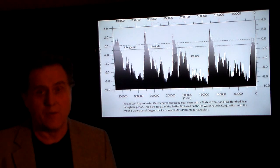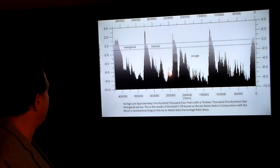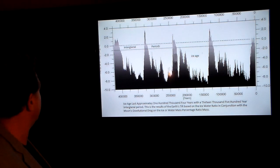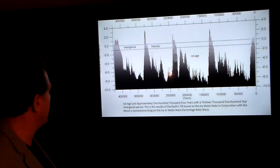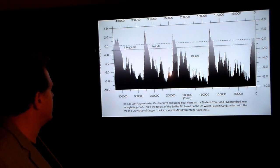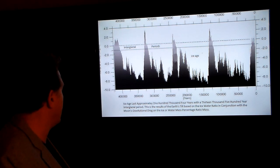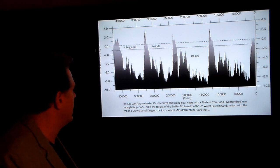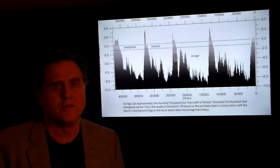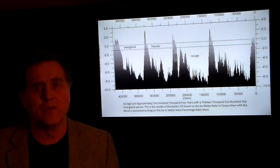Again, these are our ice samples. An ice age lasts approximately 104,000 years and 13,500 years for interglacial period. This is the result of the earth's tilt based on the ice-water ratio in conjunction with the moon's gravitational drag on the ice or water mass percentage ratios. You don't need a formula for this stuff, you don't need to confuse it.